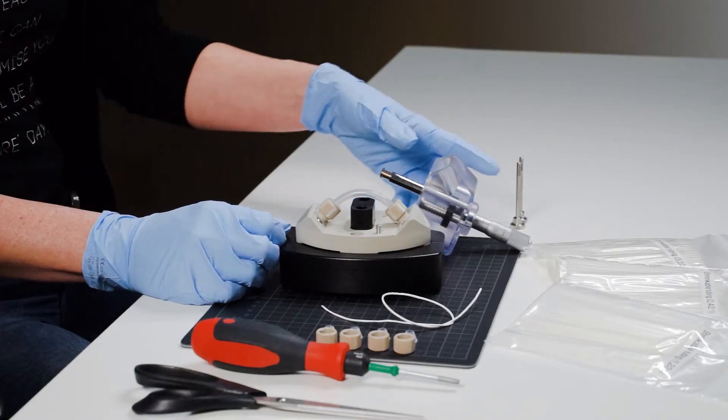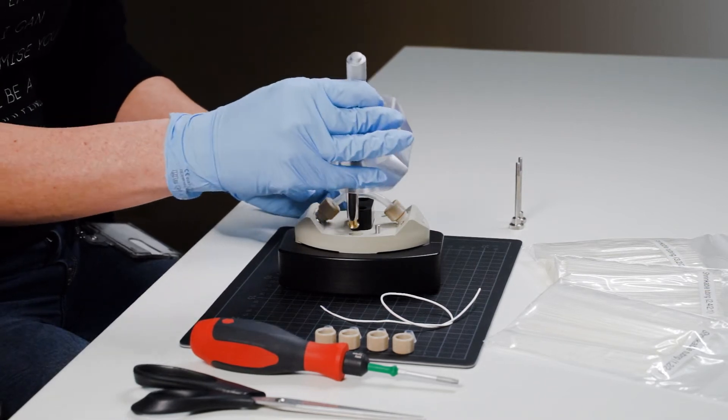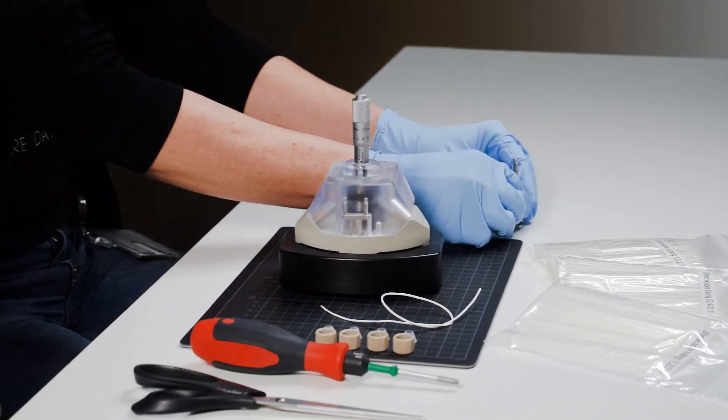Put the upper part of the measuring cell for flexible tubing on the lower part of the cell and fix the two parts with the screws.